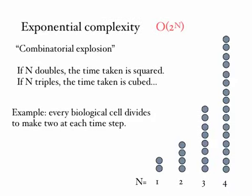Exponential complexity is specified order 2 to the N. For instance, we usually associate this with what are called combinatorial explosions. In this case, for instance, if N doubles, then the time taken is squared. If N triples, then the time taken is cubed.